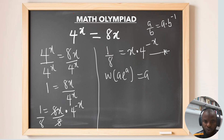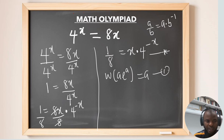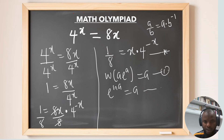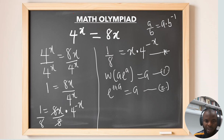I want you to understand two key facts. Fact 1: we want to rewrite 4^(-x) using an exponential. Fact 2: e to the power of the natural log of a equals a — because the natural log cancels the exponent. Once we know these facts, we apply them to our equation.